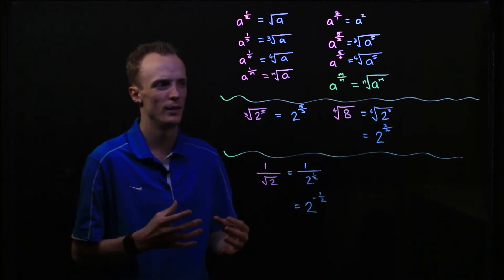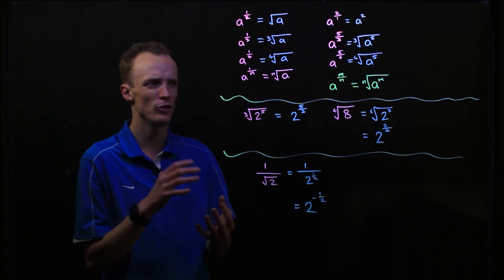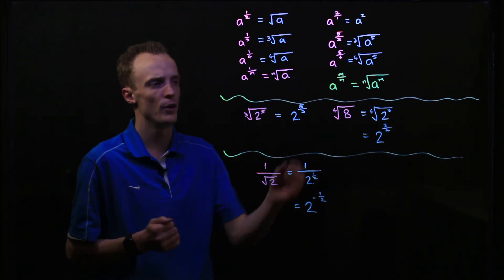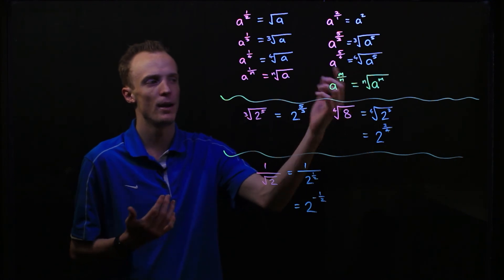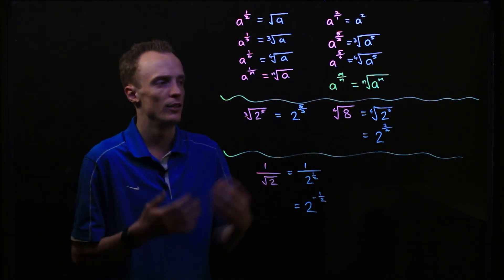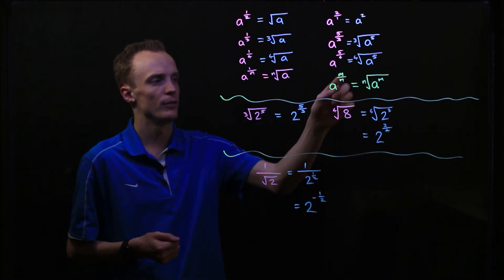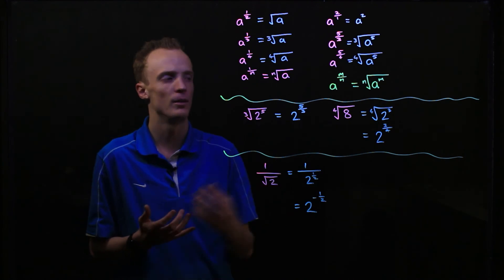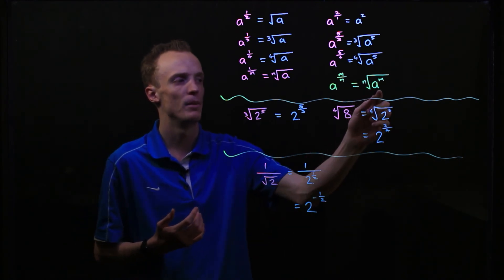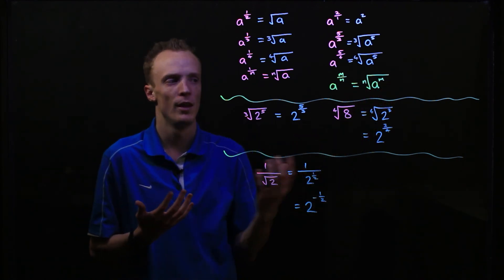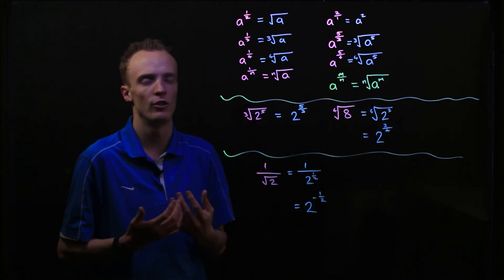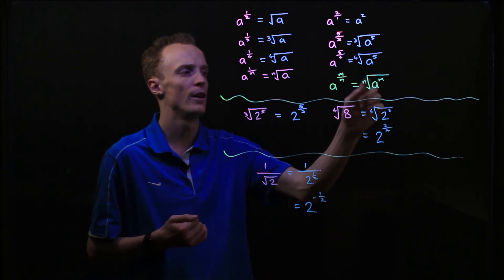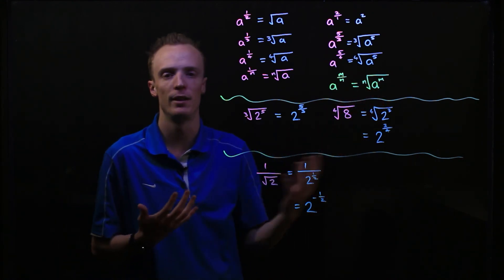So to summarize rational indices: where we've got a number to the power of a fraction, the numerator of that fraction tells us how many times we need to multiply that number by itself, and the denominator of that fraction tells us what root we need to find of that value.